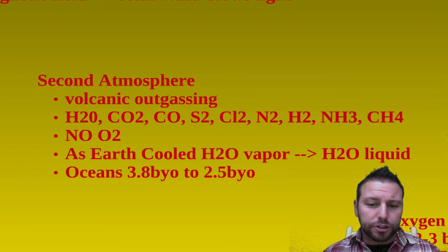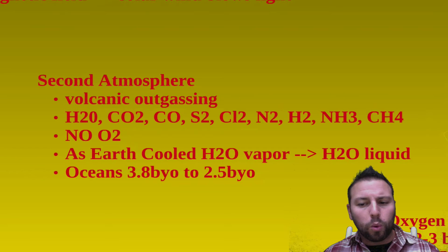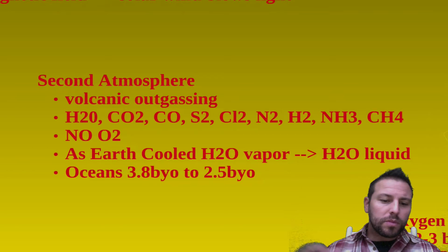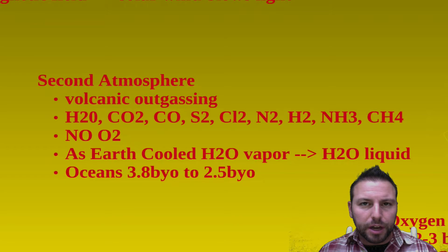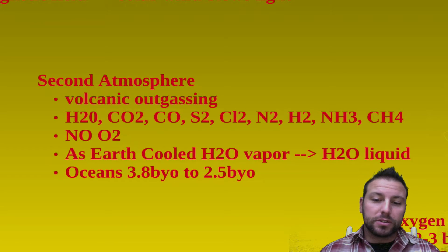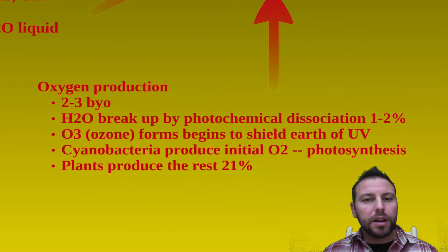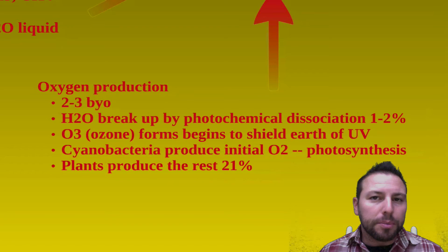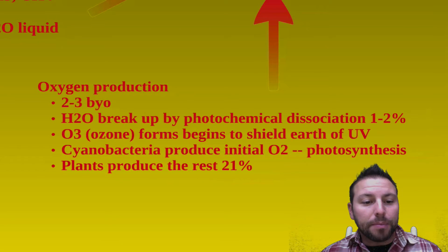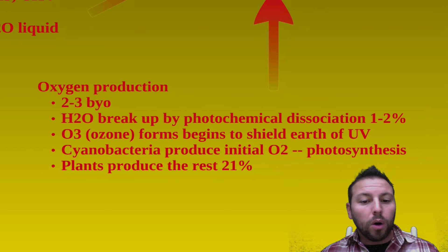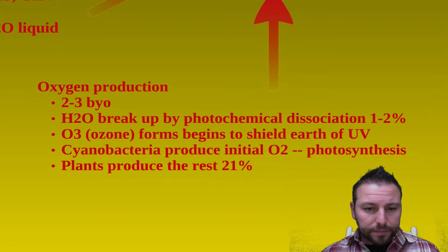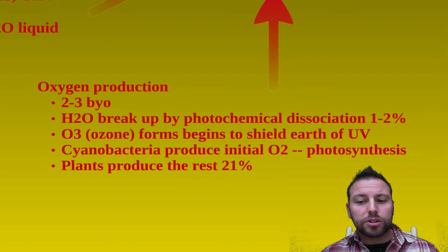Still at that point, there was no oxygen. It wasn't until Earth started cooling that water vapor began condensing to produce liquid water on our surface, with our oceans forming anywhere from about 3.8 to 2.5 billion years ago. Moving ahead, we finally get oxygen production about two to three billion years ago. Water breaks up by sunlight coming in — photochemical dissociation — giving a very small amount of oxygen. Ozone also begins to form, which is O3, and it starts shielding the Earth from UV radiation.